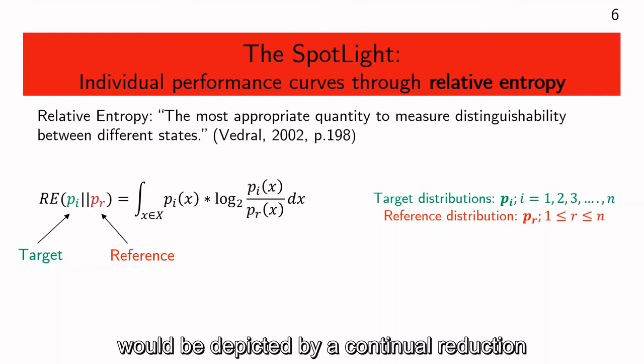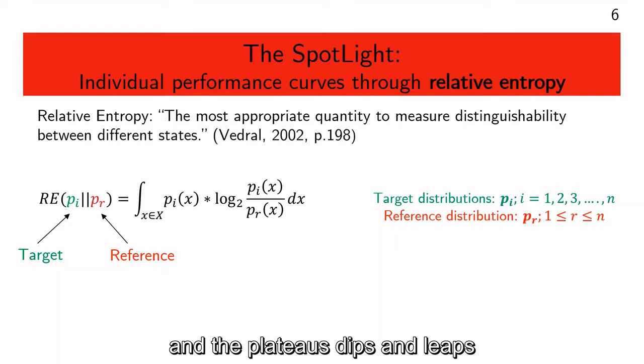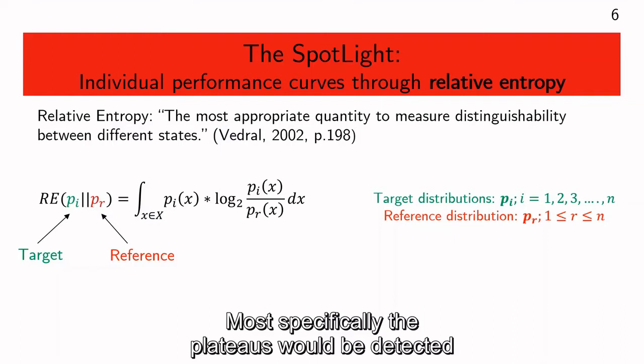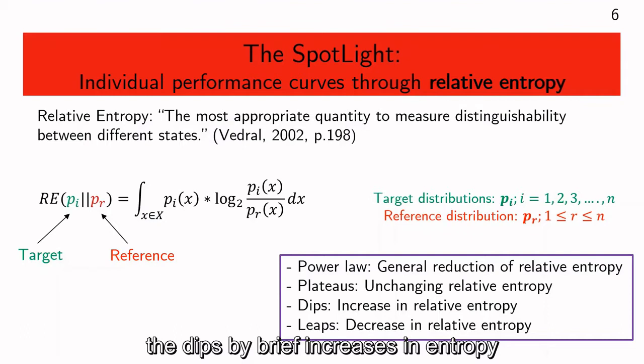The result is that power law-like improvements are depicted by a continual reduction of relative entropy, and the plateaus, dips, and leaps appear as exceptions from this trend. Specifically, plateaus are detected by unchanging relative entropy, dips by brief increases in entropy, and leaps by sharp sudden decreases of relative entropy.